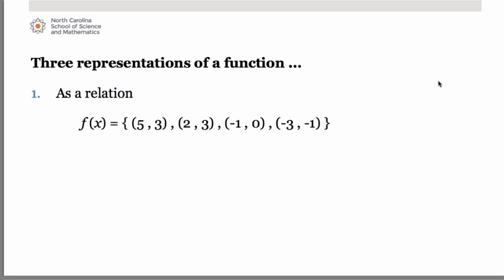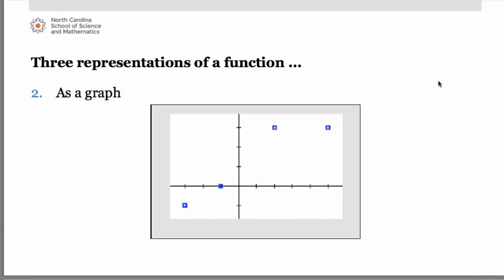For example, we have the function given by the relation of points (5, 3), (2, 3), (−1, 0), and (−3, −1). The second representation would be that of a graph — a plotting of those four ordered pairs. Starting from the far left: (−3, −1), (−1, 0), (2, 3), and (5, 3). This is a function because each x is paired with only one y.